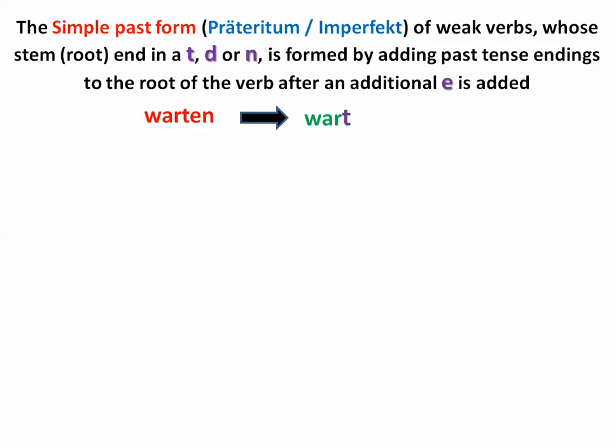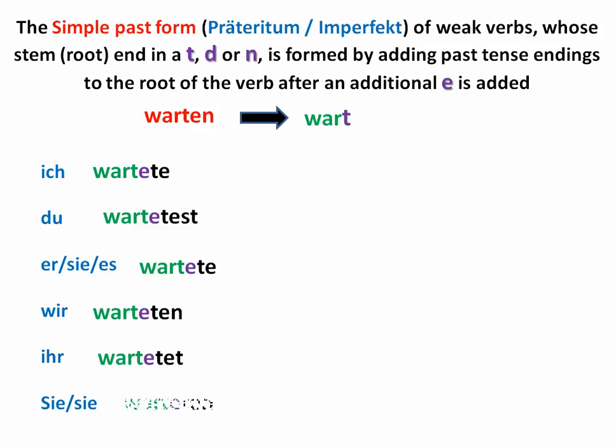One trick to be aware of: if the stem of a verb ends in -t, -d, or -n after you drop the -ien, you need to add an extra -e before you add the -te endings. So for warten: Ich wartete, Du wartetest, Er wartete, Wir warteten, Ihr wartetet, Sie warteten. In spoken German, you'd more likely use the perfect tense — ich habe auf dich gewartet — but it's important to recognize the simple past form when you see it written.